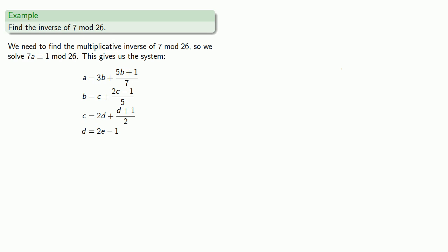And so now we have our system, and if e is an integer, everything else will be as well. Now since our first computation is to find 2e minus 1, we'll make e equal to 1.